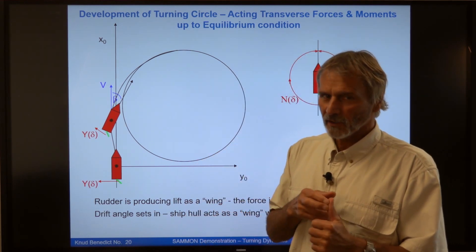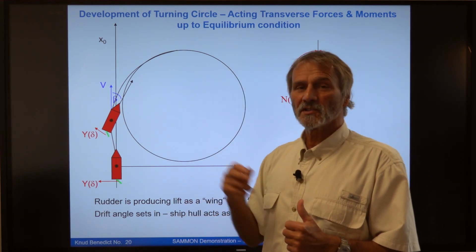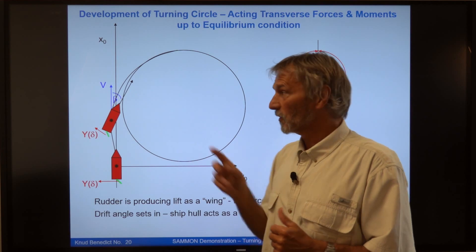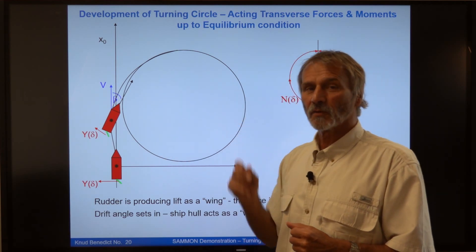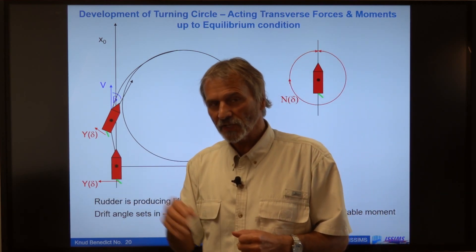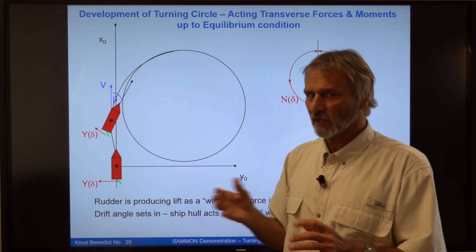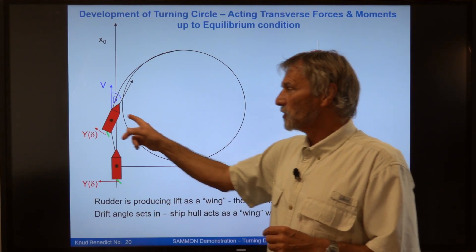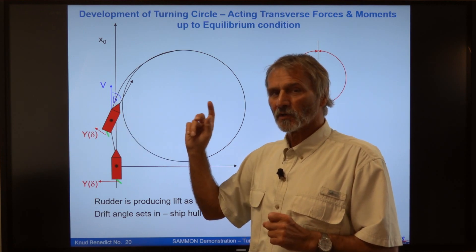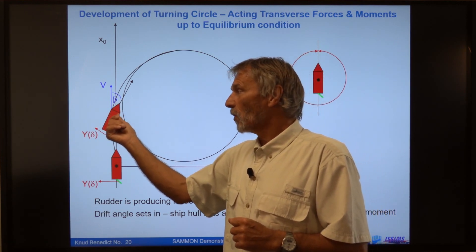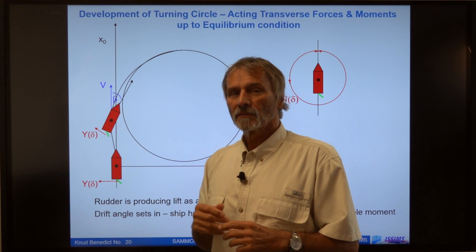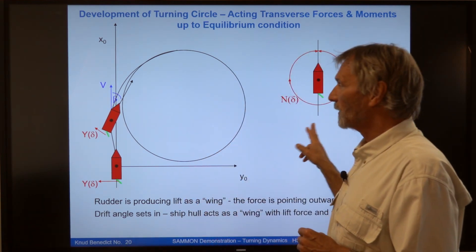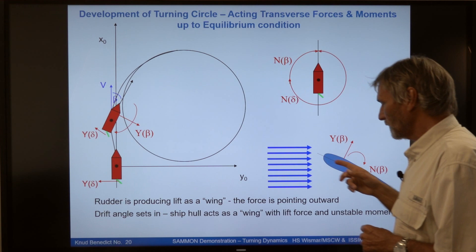On one hand, it is increasing the resistance of the ship. So in the future, the ship will slow down and decrease, even if the propeller is still running with the same engine order. But the ship will deviate, this is the most important effect. There's a force due to this drift motion. And this force, you can see here,